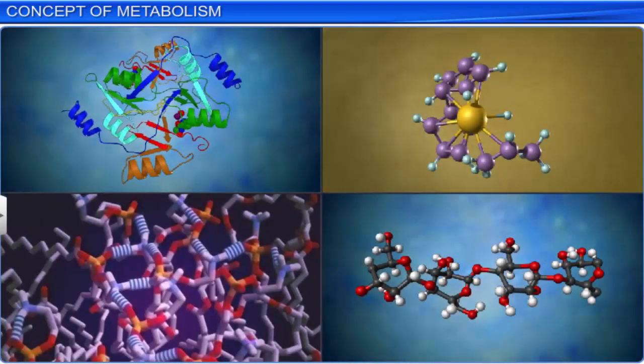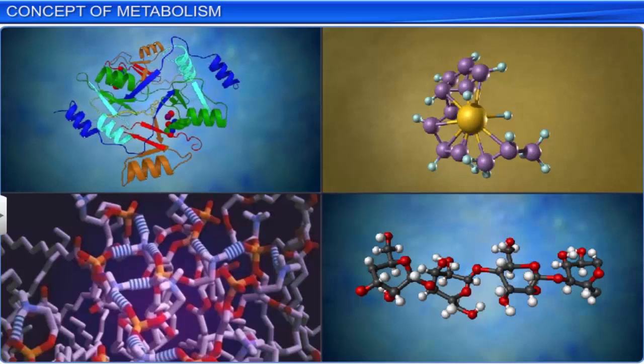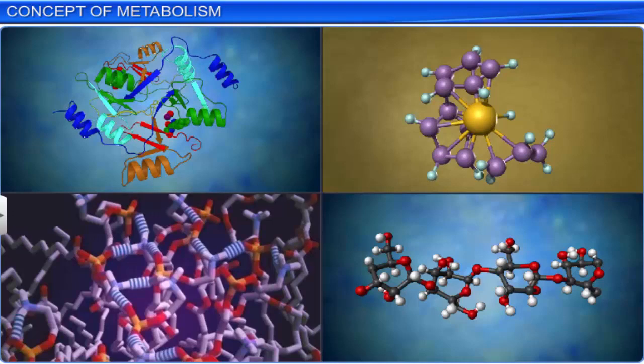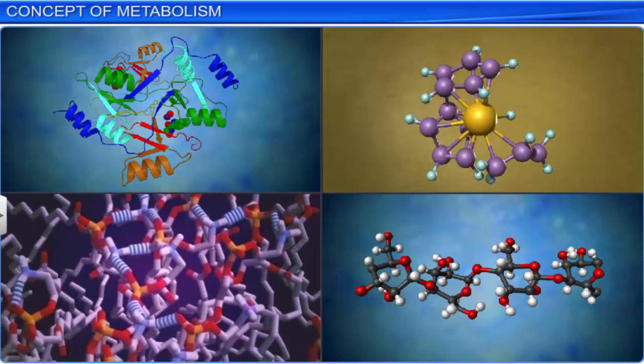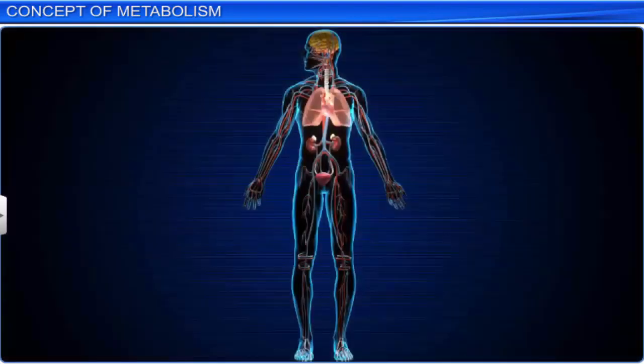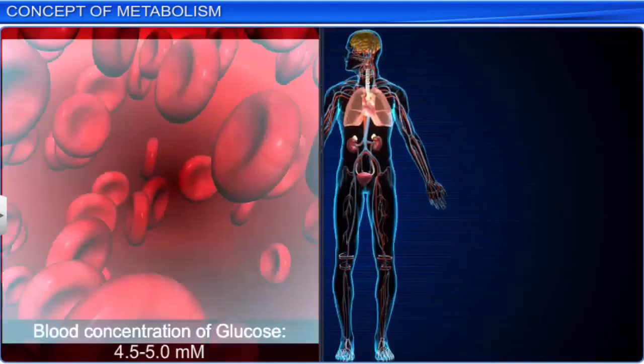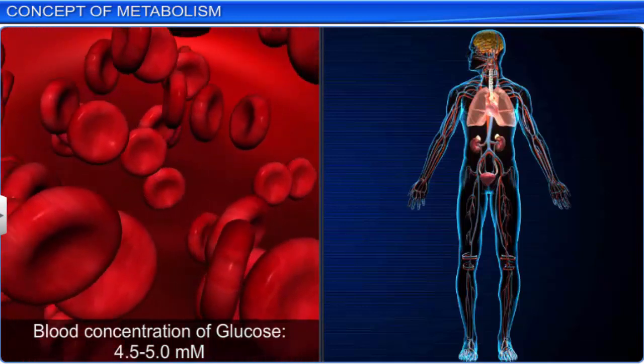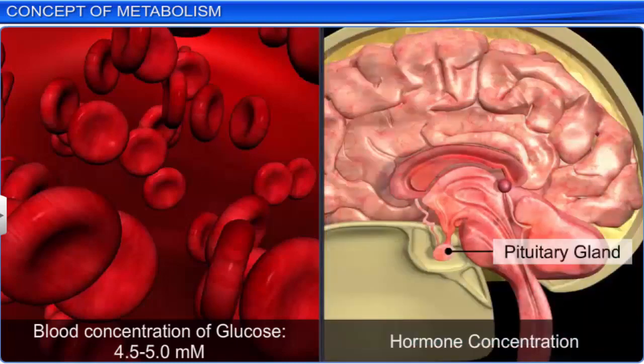As you have studied, thousands of metabolites, or biomolecules, are present in living organisms. Each of these biomolecules has a definite concentration. For example, the blood concentration of glucose in a normal healthy individual is 4.5 to 5.0 millimolars. While that of hormones is measured in nanograms and milliliters. Moreover, these biomolecules are constantly a part of the metabolic process.